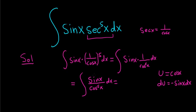Now we don't have a negative in the integrand here. So what we'll do is we'll multiply both sides by negative 1. So we have negative du equals sine x dx.